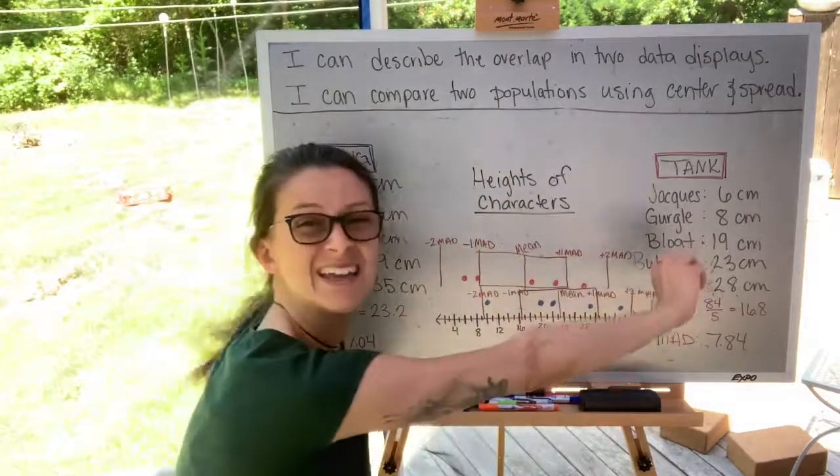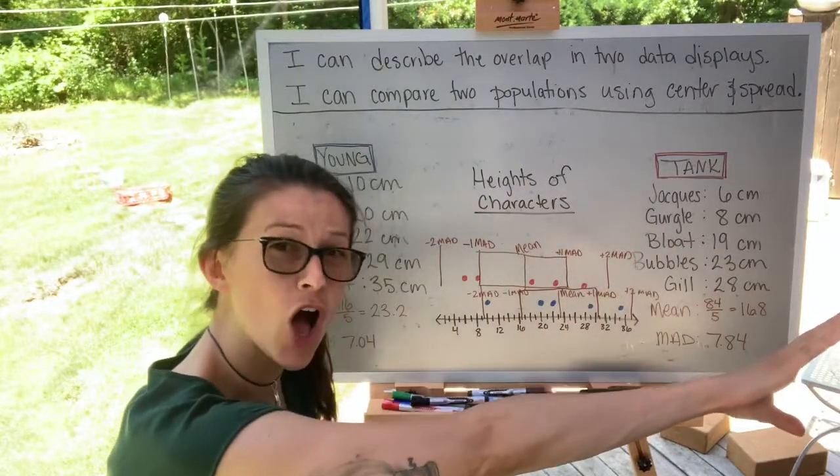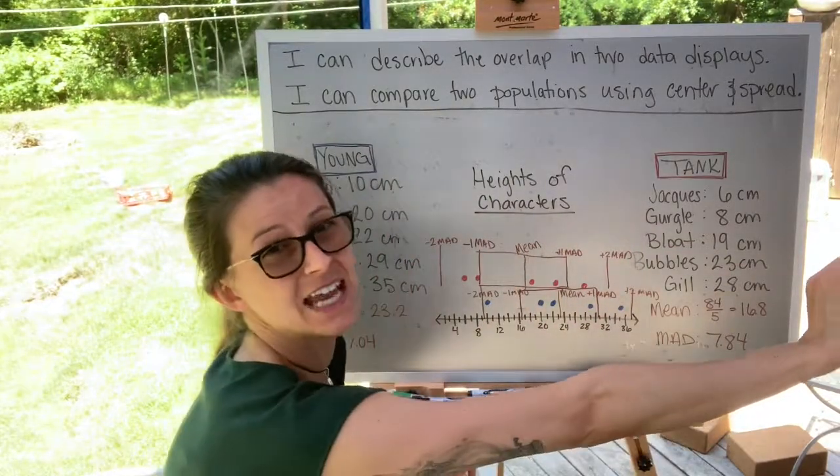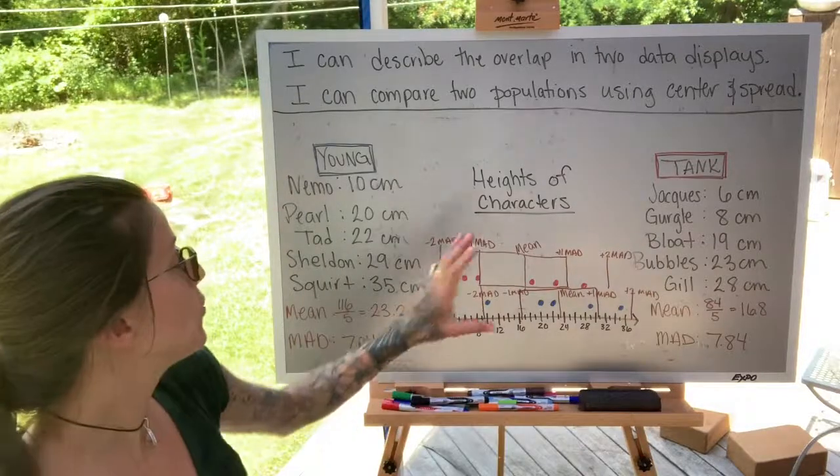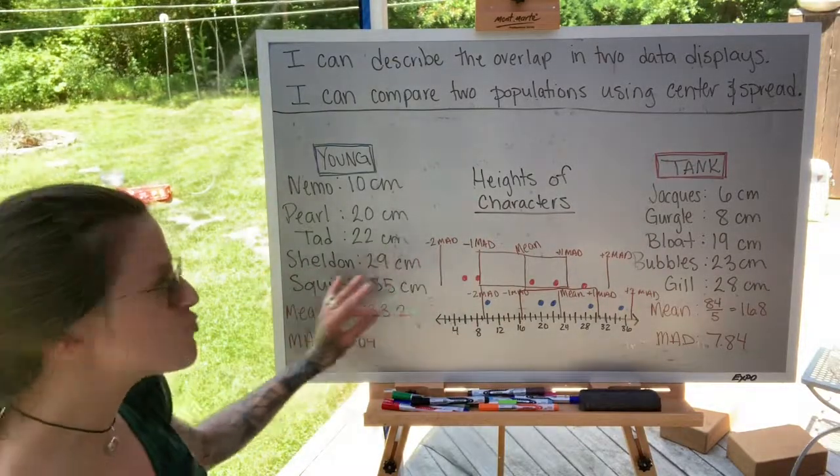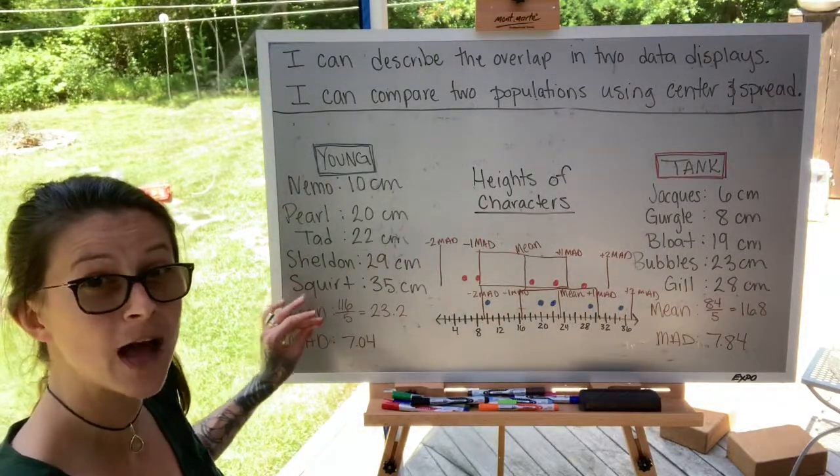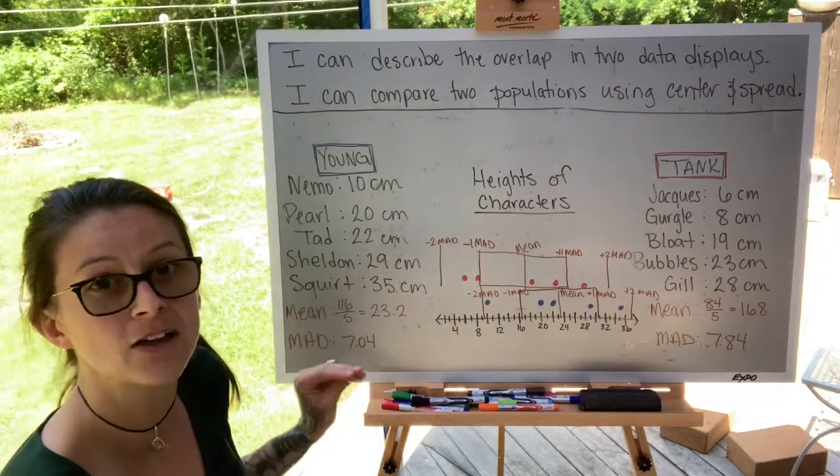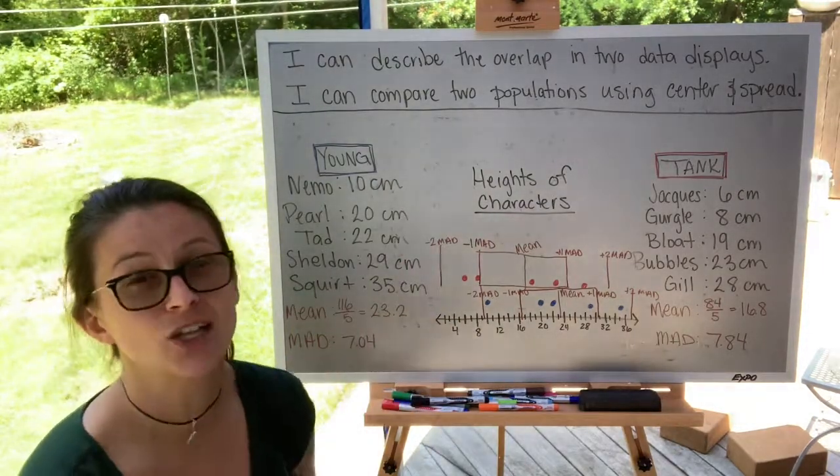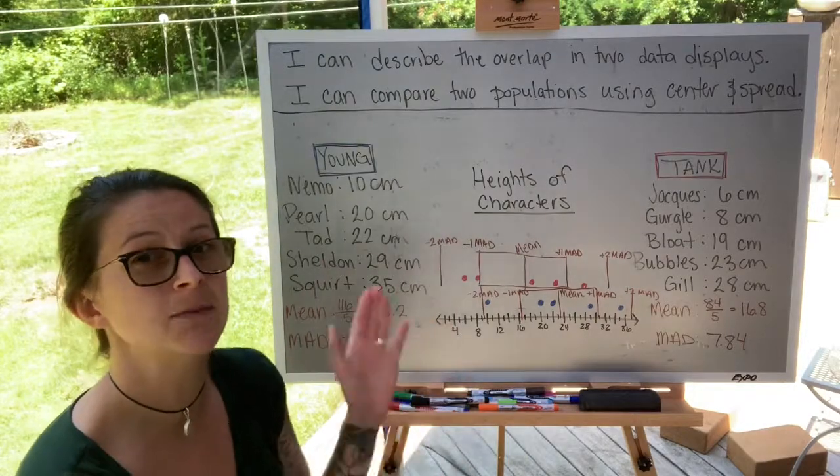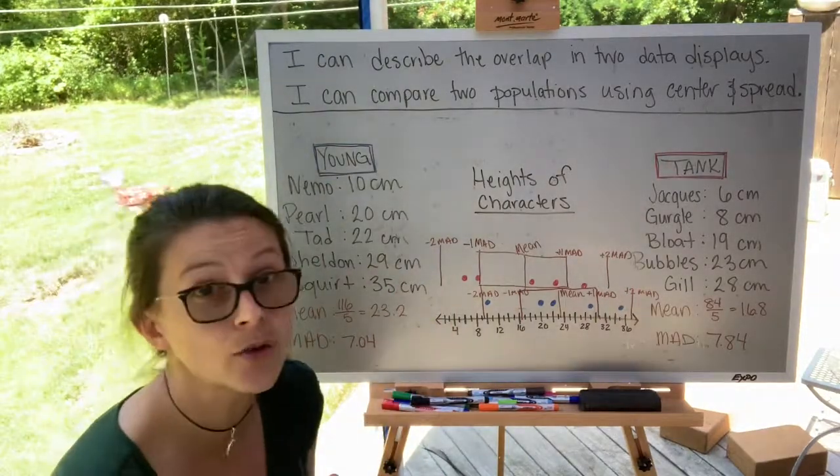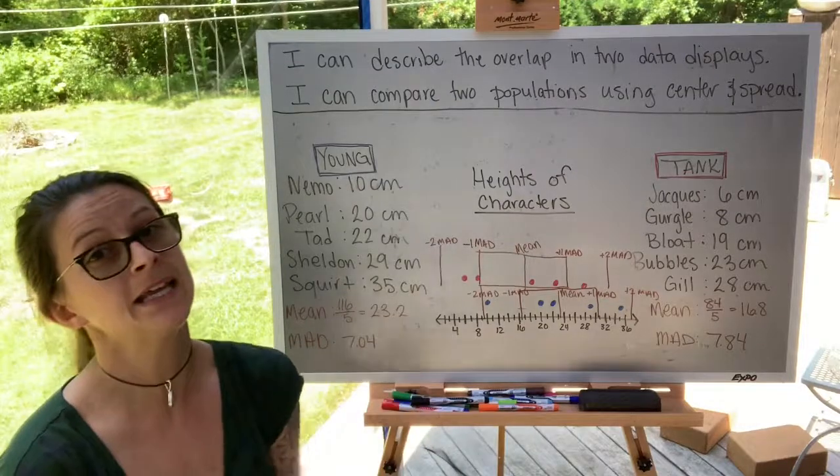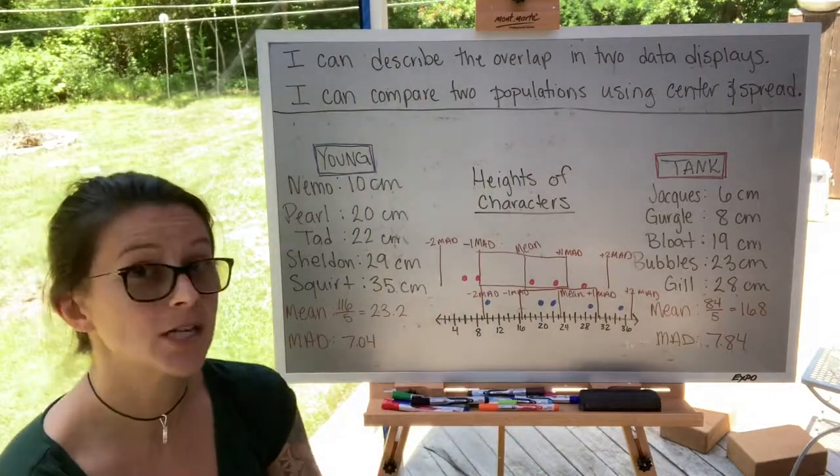If they were skewed right, we would have one character that was really tall pulling the data to the right. And if we were skewed left, we would have a really tiny, maybe microscopic character that would pull the mean to the left when we calculated it. And we don't have that here. So we are safe to use the mean and the mean absolute deviation. Otherwise, we would use the median and the quartiles and a box and whisker plot.